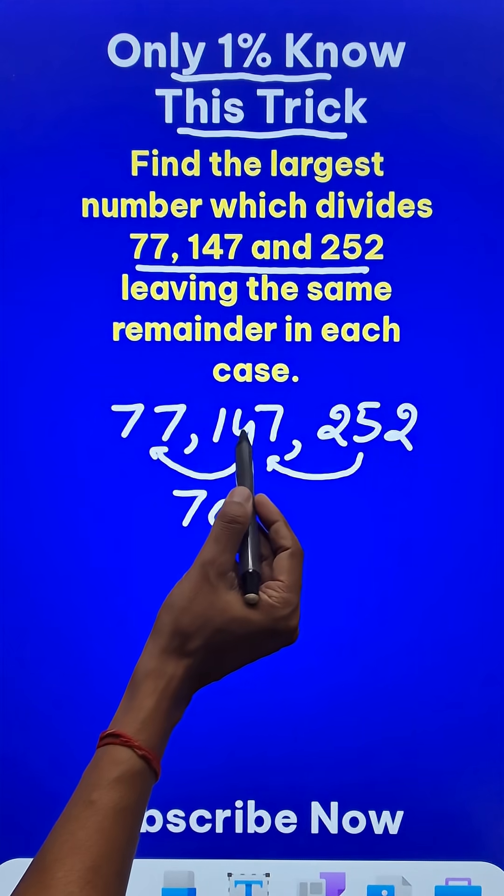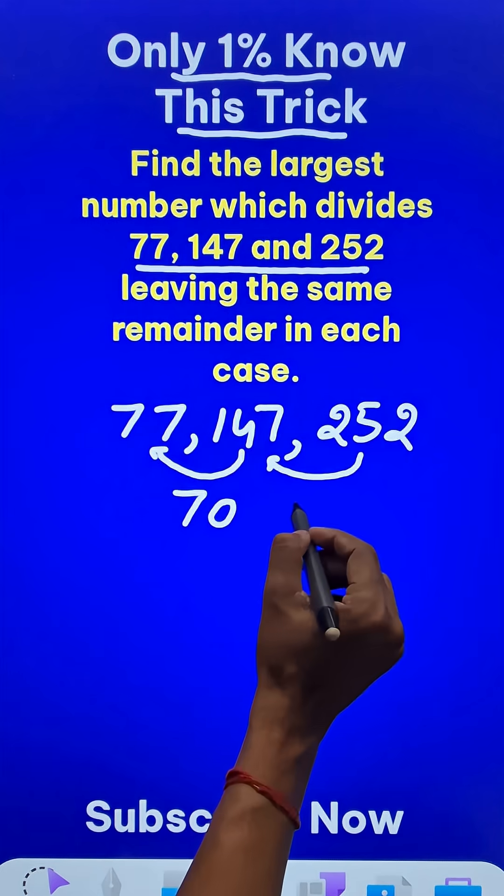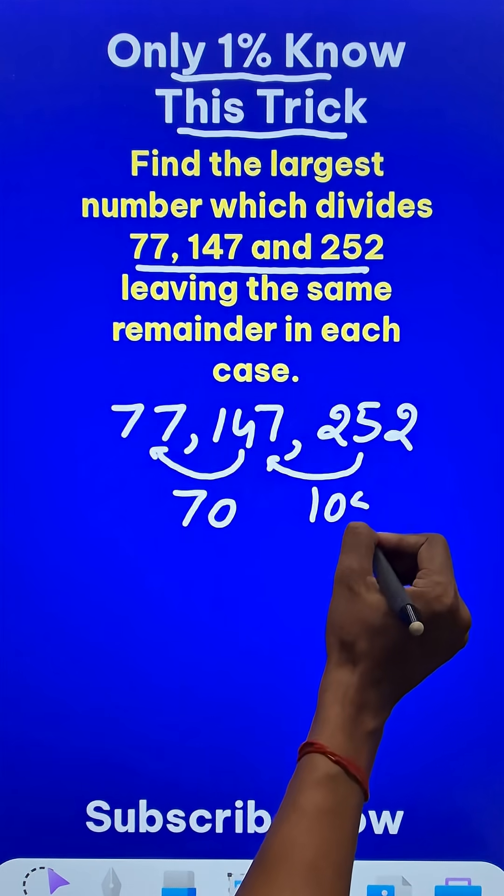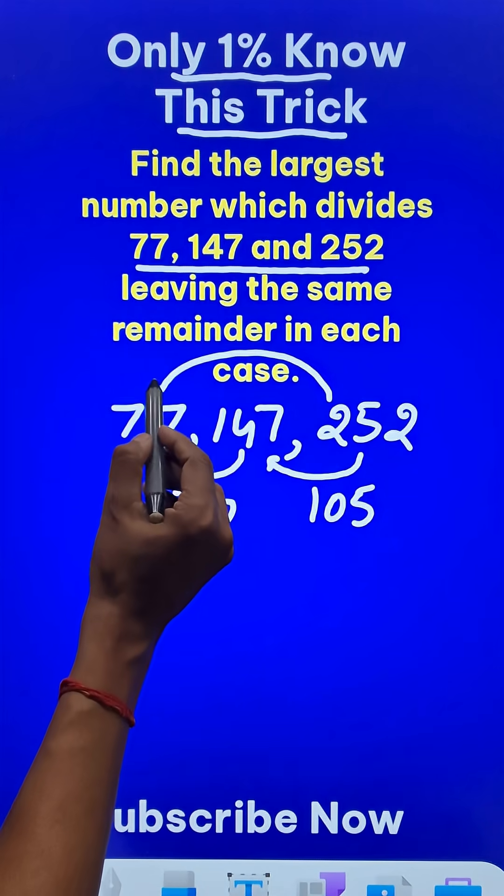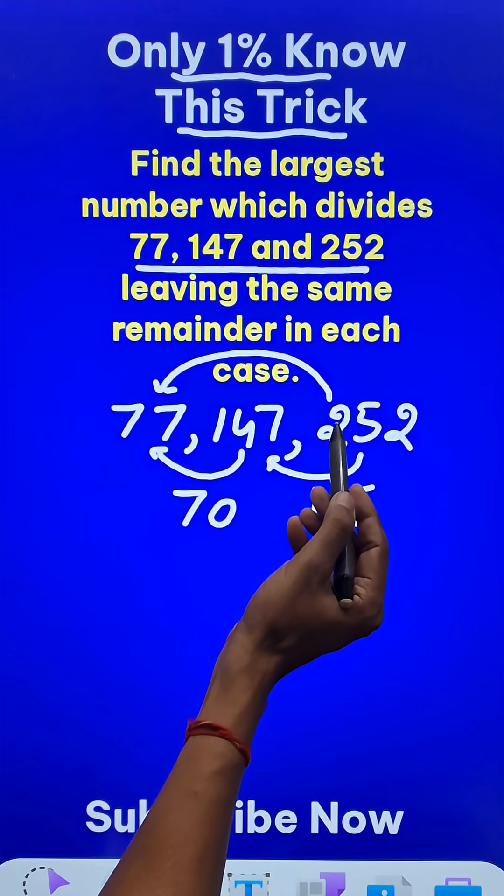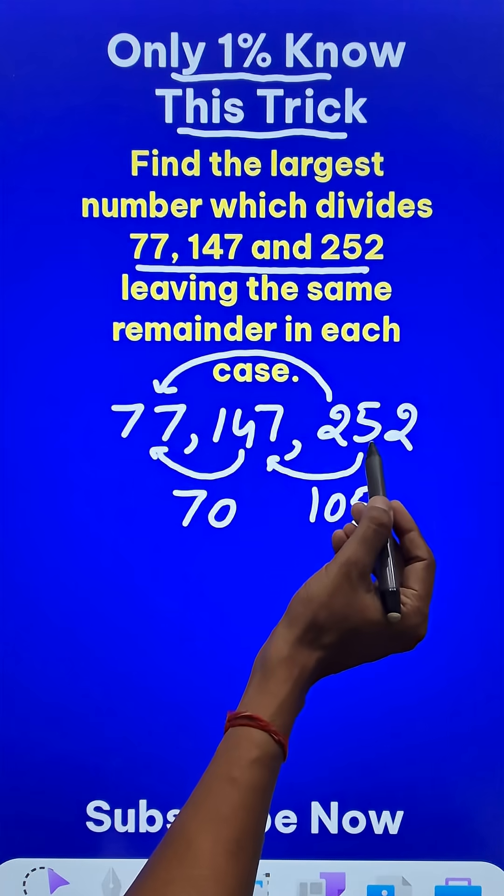So 252 minus 147 will be 105, and then the difference between the first and the last will be 175.